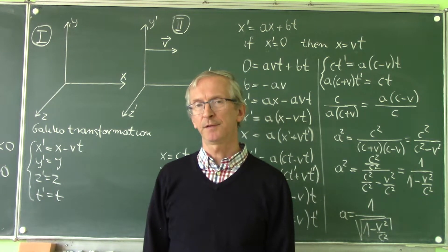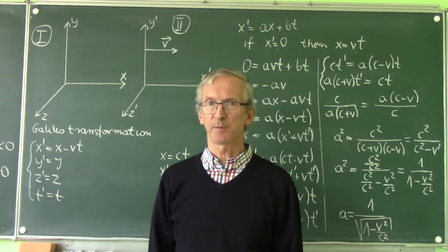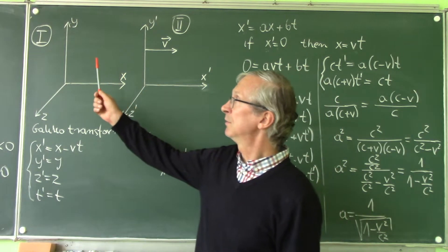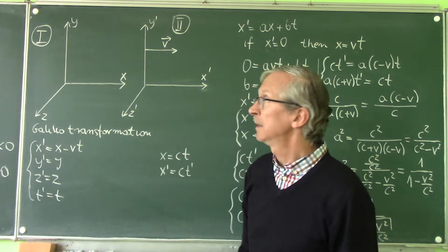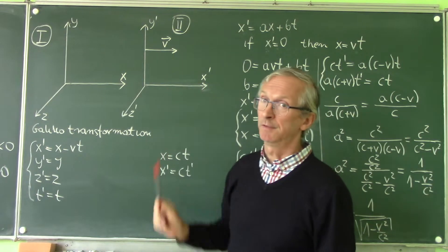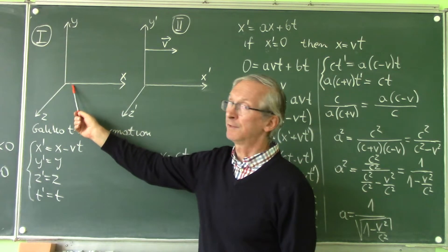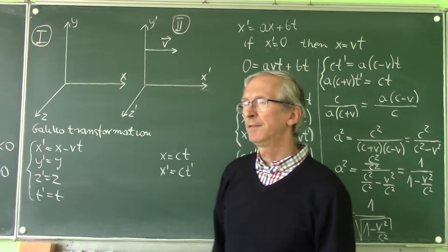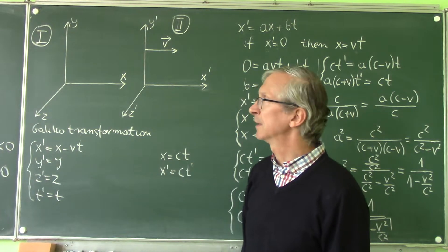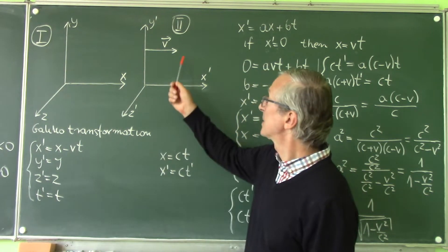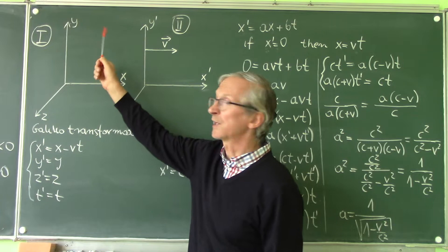Today we want to derive the Lorentz transformation. It will be a special case of this transformation. We have two inertial frames of reference, the first and the second, and we assume that the second frame of reference is moving in the direction of the x-axis. The more general Lorentz transformation is the case where the velocity has components in the direction of all axes.